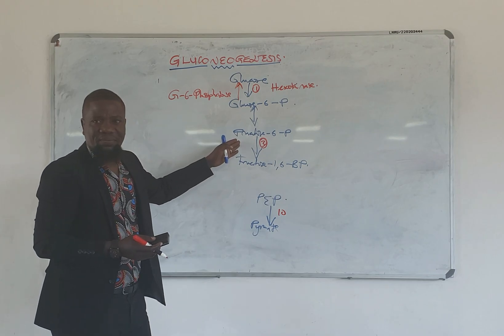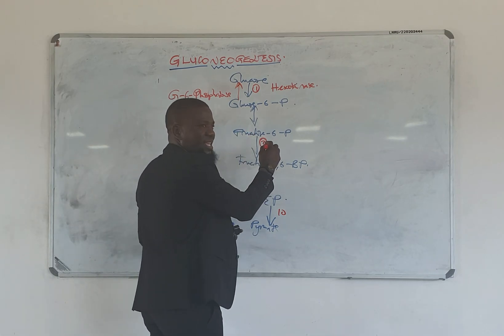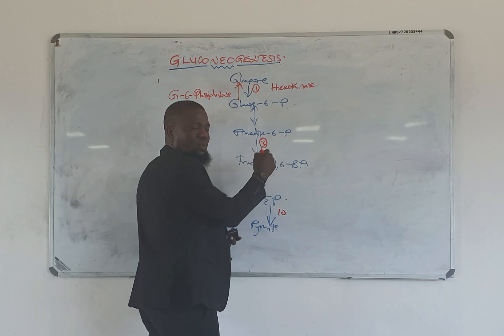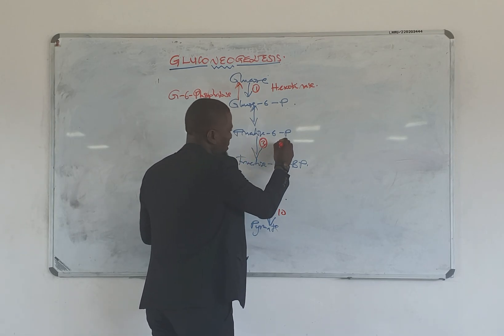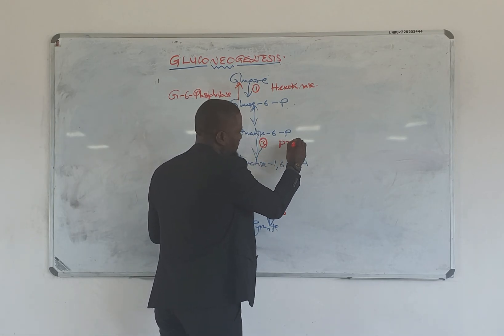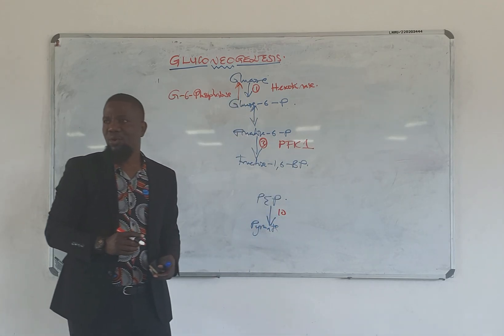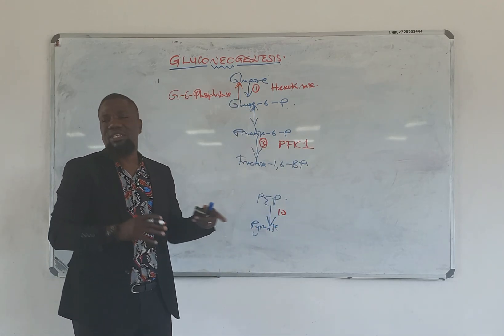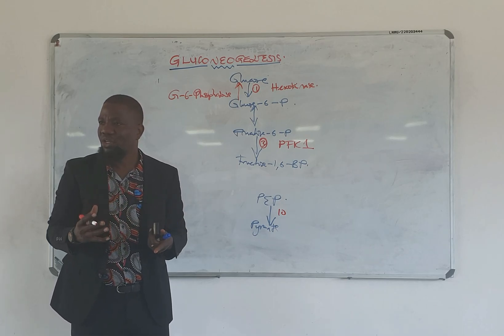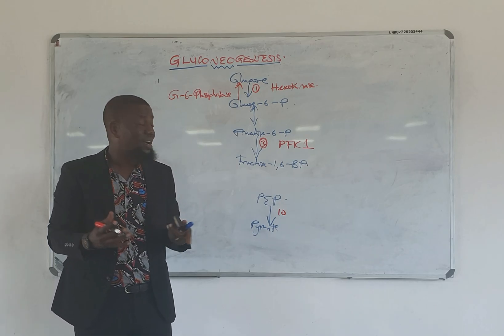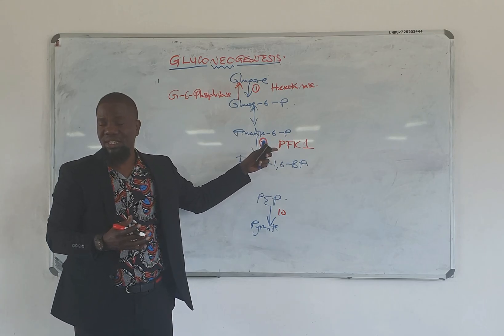What about here? The first reaction — what's the name of the enzyme in glycolysis? PFK1, right? Which we said was a special site for regulation of glycolysis. In fact, it's also a special part for regulation of gluconeogenesis as well.